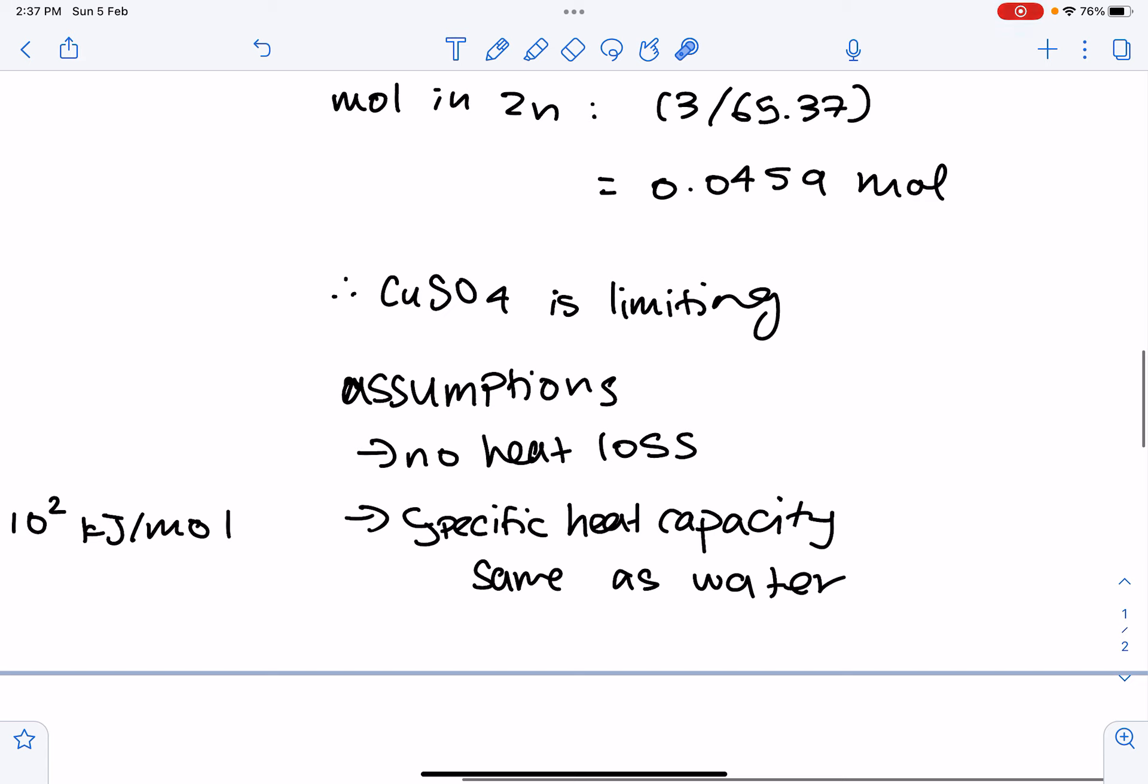So, some assumptions which are made in this reaction is that there is no heat loss from the polystyrene cup. Although it is a very good insulator of heat, some heat will be lost to the surroundings and it could be reduced by carrying out the reaction in a vacuum flask, for example. And the other assumption made is that the specific heat capacity and the density of the reaction mixture are equal to those of water. A more accurate method would be to use the actual density and specific heat capacity of the solution. However, in this case, we just use water-specific heat capacity and assume 1 gram per cm cubed for the density of water.